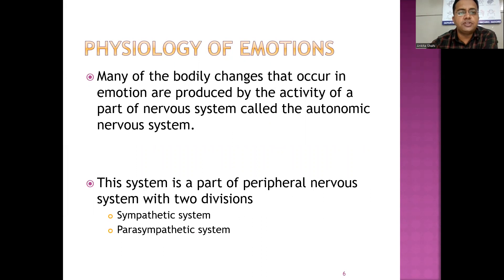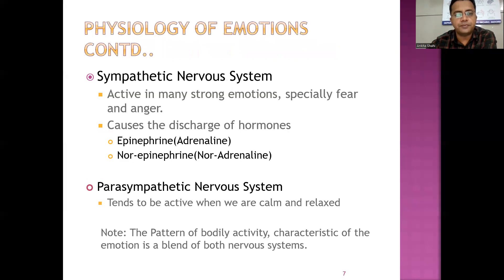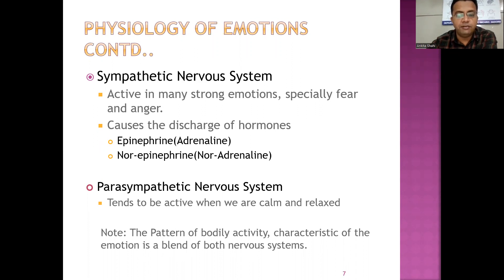Coming to Physiology of Emotions. Many of the bodily changes that occur in emotion are produced by the activity of a part of the nervous system called the autonomic nervous system. This system is a part of the peripheral nervous system with two divisions: the sympathetic system and the parasympathetic system. The sympathetic nervous system is active in many strong emotions, especially fear and anger, and causes the discharge of hormones, especially epinephrine and norepinephrine. The parasympathetic nervous system tends to be active when we are calm and relaxed. The pattern of bodily activity characteristic of emotion is a blend of both nervous systems.